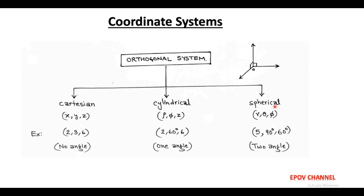Among these coordinate systems, Cartesian is the simplest form and its coordinates are x, y, z. For example, (2, 3, 6). Here, there is no angle.